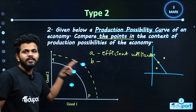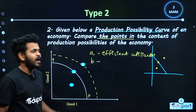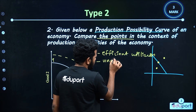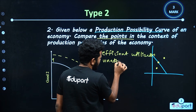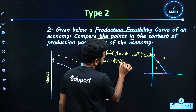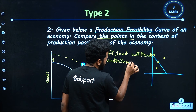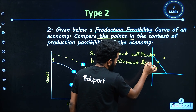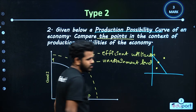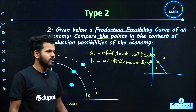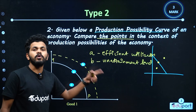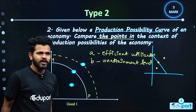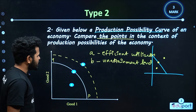This one is Unattainable. That's not unattainment, but what is the possibility? The possibility of growth. We have a great chance to get growth.